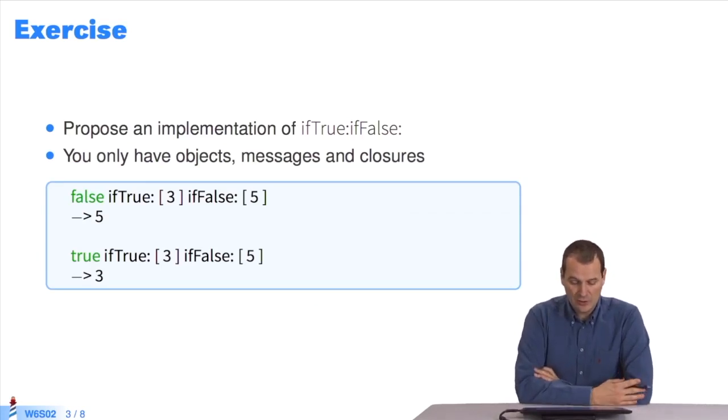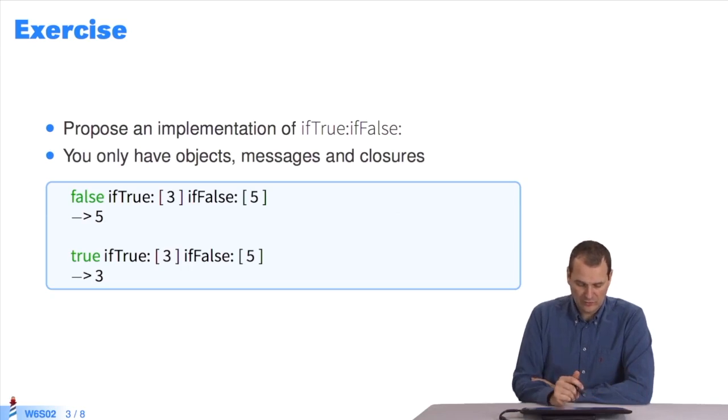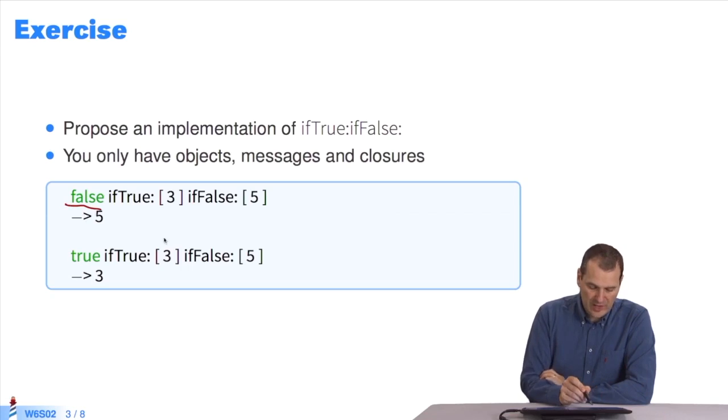I want you to propose an implementation. You know about blocks. You know what we did with true and false, and with or and not. You can do it with if-true, if-false. In sum, if my receiver is false, I return 5. And if my receiver is true, I return 3.